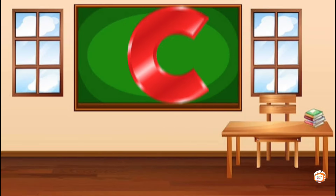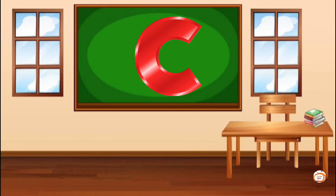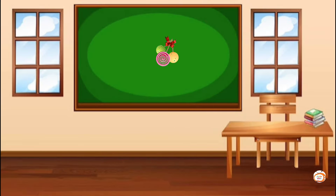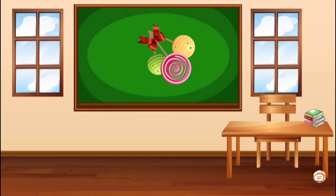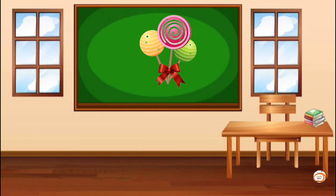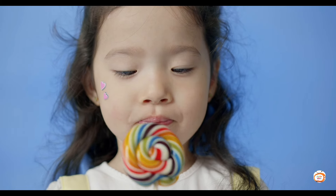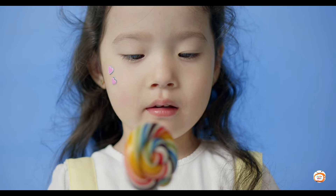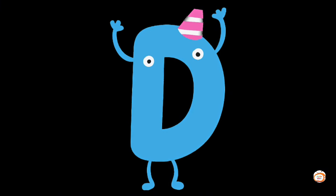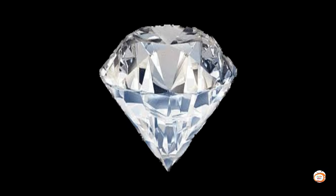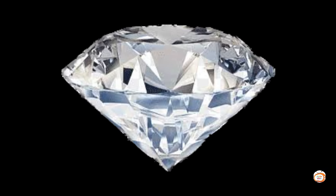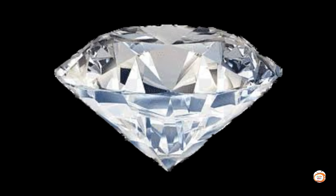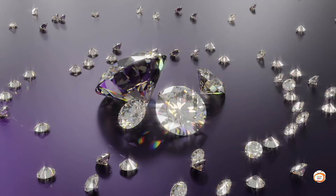C is for candy, k-k-candy, k-k-candy, C, candy. D is for diamond, dirt, dirt, diamond, dirt, dirt, diamond, D, diamond.